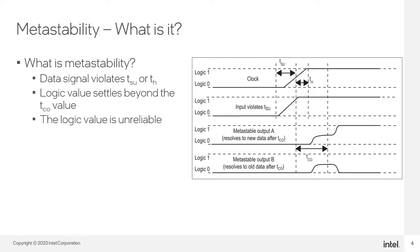When data is captured correctly, the register output is then available after a specified clock to output delay. If a data signal transition violates a register's TSU or TH requirements, the output of the register may go into a metastable state. In a metastable state, the register output hovers at a value between the high and low states for some period of time, meaning the output transition to a defined high or low state is delayed beyond the specified TCO. The time it takes for the signal to resolve to a known high or low state is unpredictable.